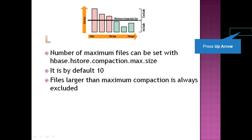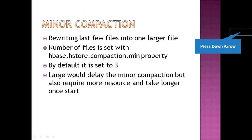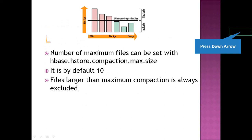There is also another property: HBase.HStore.compaction.max.size. Max size means if you put any size, then files exceeding that size will be excluded from the compaction process. It is suggested that we put the number as 10, because a large number of files will delay the minor compaction.